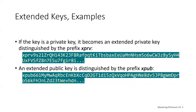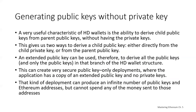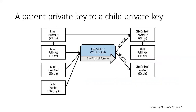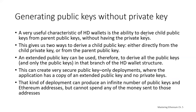Extended private keys and public keys are distinguished by the prefixes XPRV and XPUB respectively. A very useful characteristic of HD wallets is the ability to derive child public keys from the parent public key without having the private keys involved at all. Extended public keys can be used to derive all the public keys in a branch of the HD wallet structure, enabling public-key-only deployments where, for example, an e-commerce application generates public keys to create addresses to receive cryptocurrency, but the private key isn't stored on the website and therefore isn't in danger of being hacked.